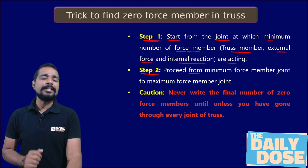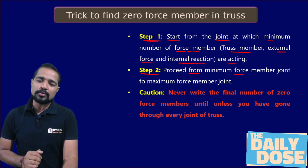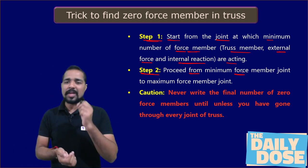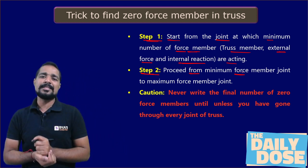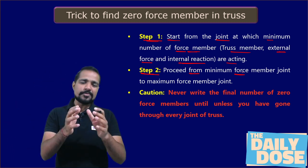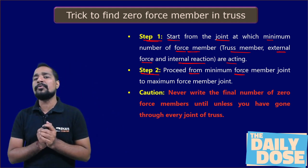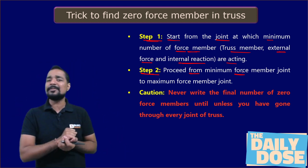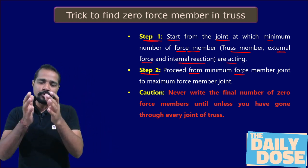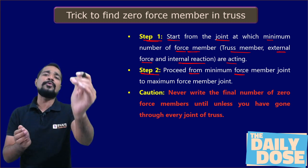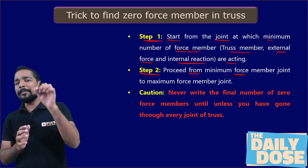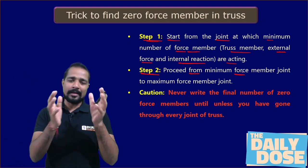You need to proceed by first going to the joint with the minimum number of forces acting — starting from two, then three, then four, and five — not in reverse order, otherwise you may get trapped or get the wrong answer. Always go from the minimum number of force members to the maximum.